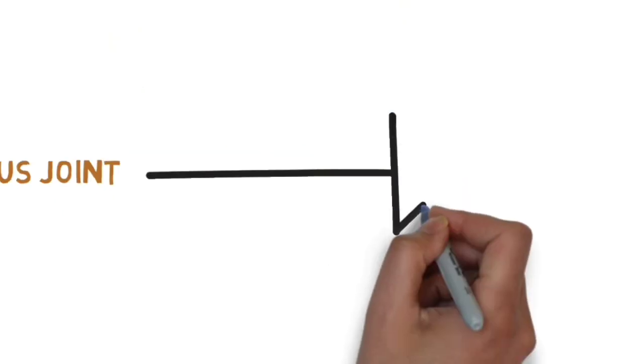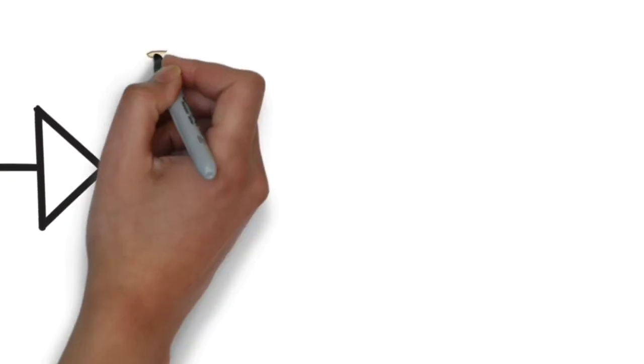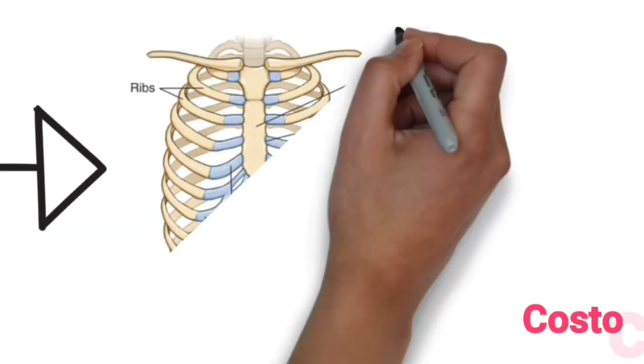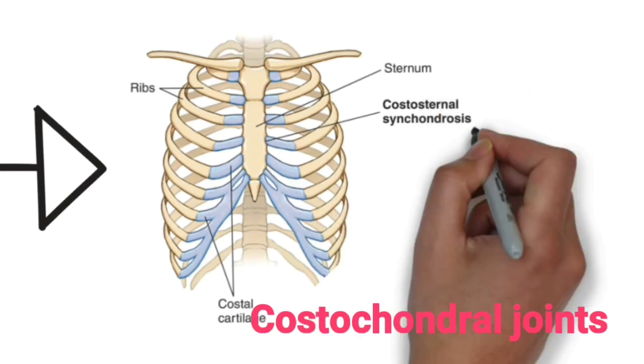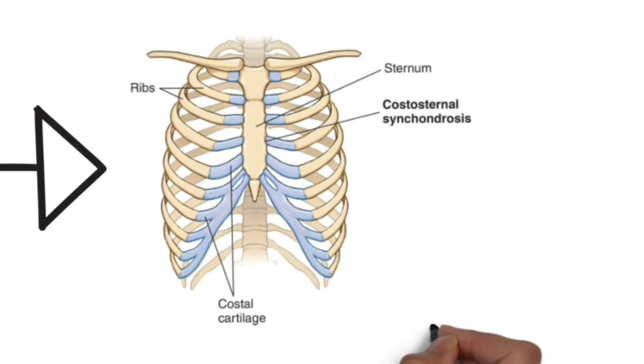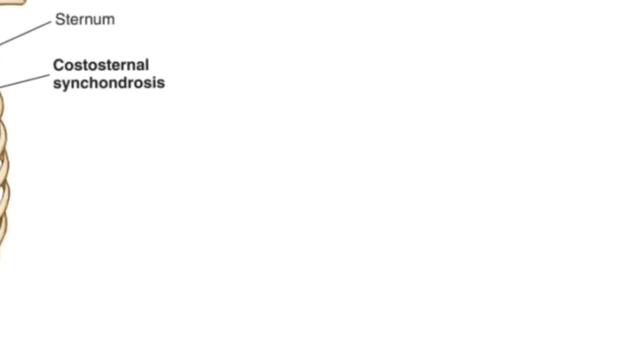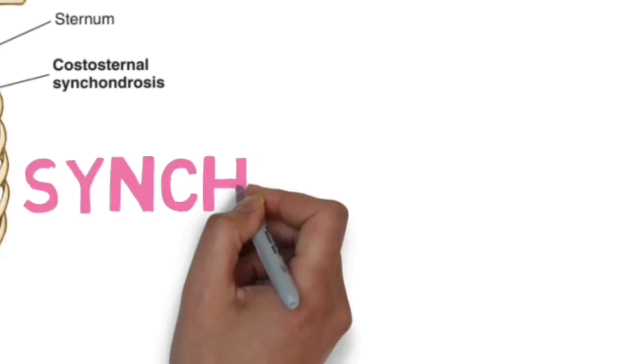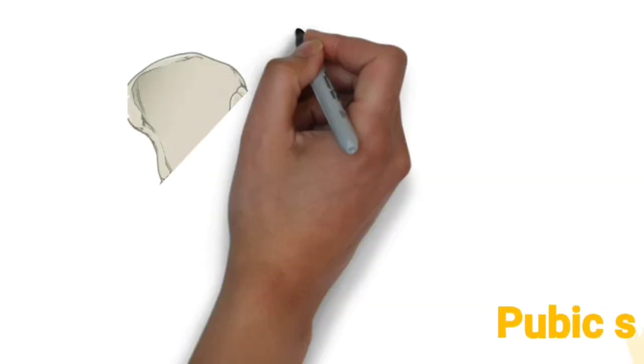Cartilaginous joint is subdivided into two types. The costochondral junction is an example of synchondrosis, and the two pubic bones which articulate to form the pubic symphysis.